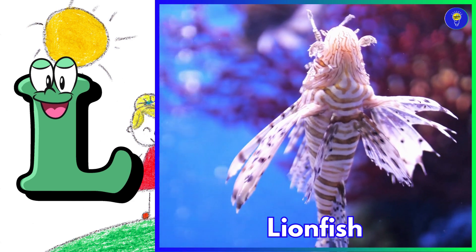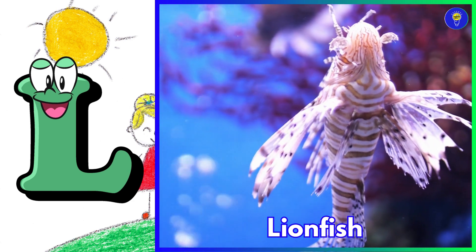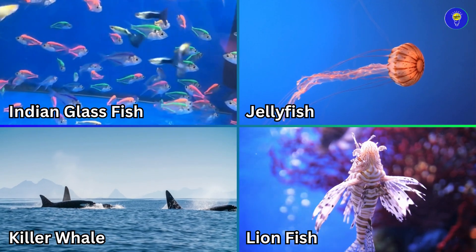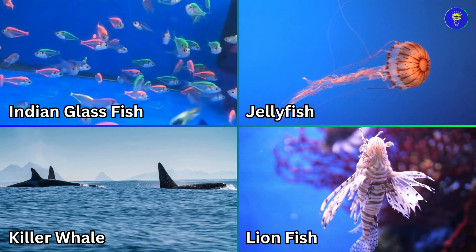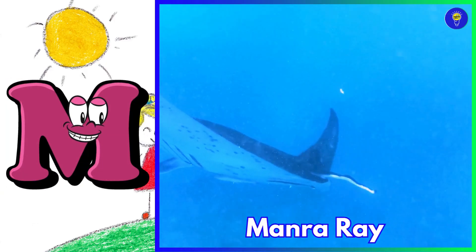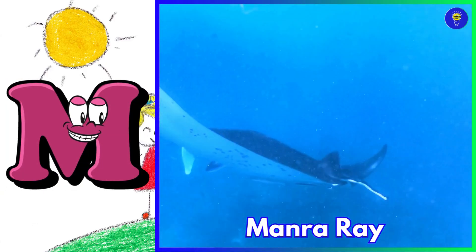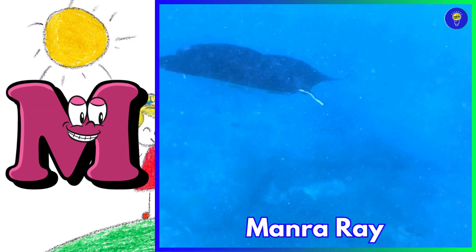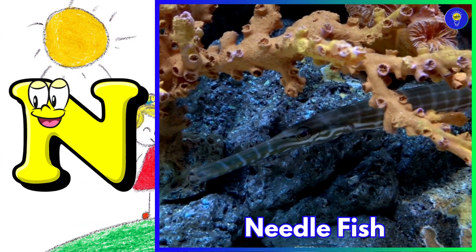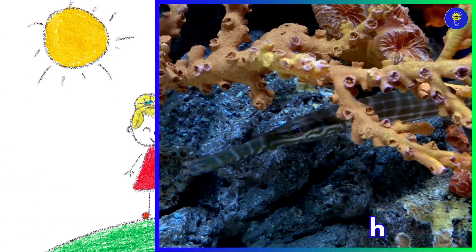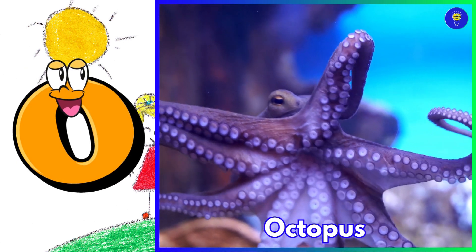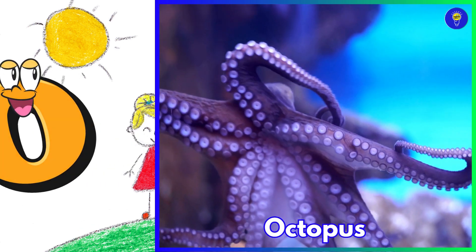L is for lionfish. M is for manta ray. N is for needlefish. O is for octopus.